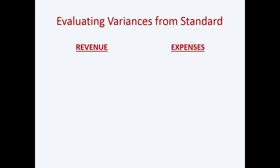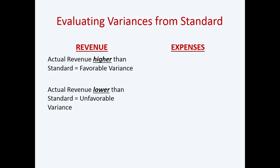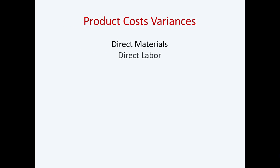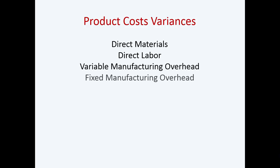When evaluating variances from standard: if revenue is higher than you budgeted, that's favorable; if it's lower, it's unfavorable. Just the opposite for expenses — if expenses are higher than you budgeted, that's unfavorable; if they're lower, they're favorable. Product cost variances can include direct materials, direct labor, and variable and fixed manufacturing overhead.